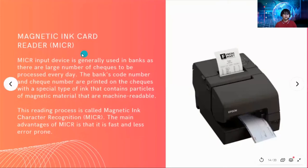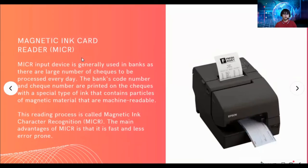Next, we also have the Magnetic Ink Card Reader, or MICR. The MICR input device is generally used in banks, as there are large numbers of checks to be processed every day. The bank's code number and check number are printed on the checks with a special type of ink that contains particles of magnetic material that are machine readable. This reading process is called Magnetic Ink Character Recognition, or MICR. The main advantage of MICR is that it is fast and less error prone.